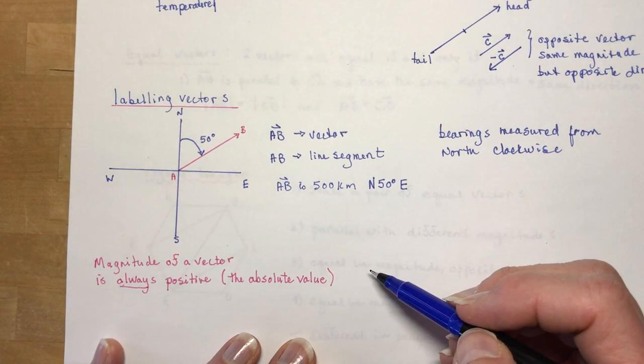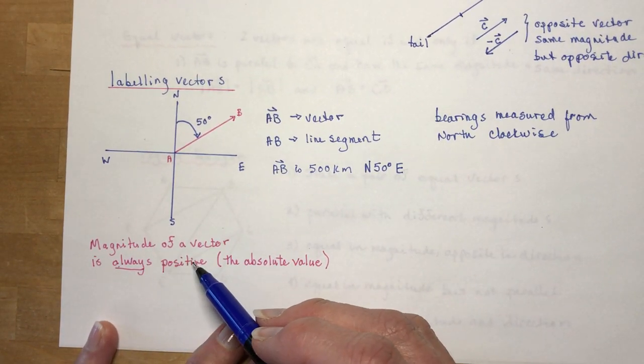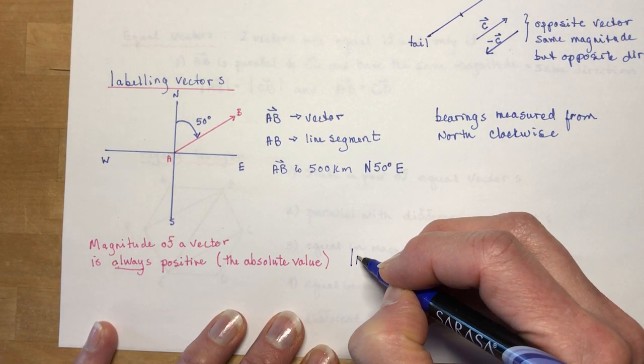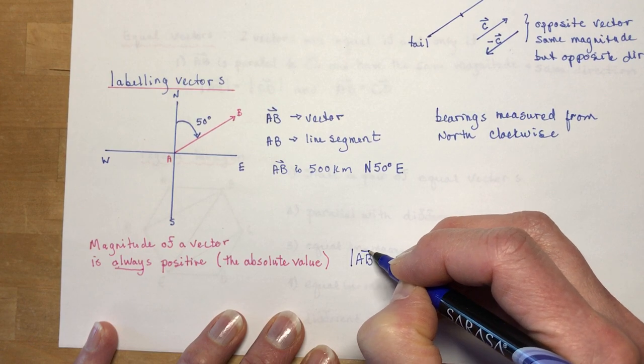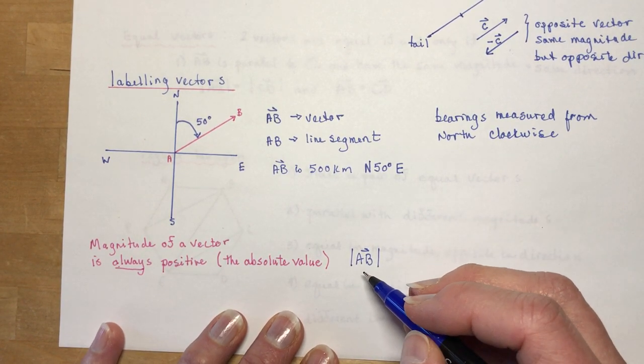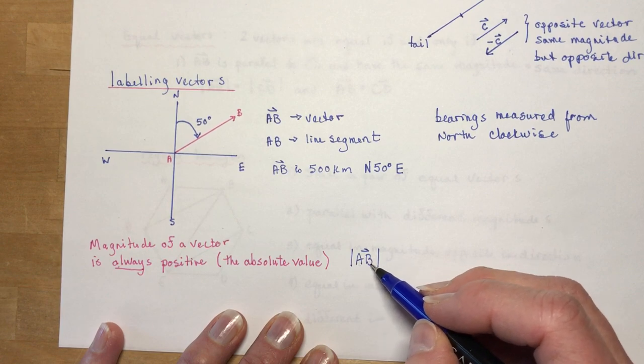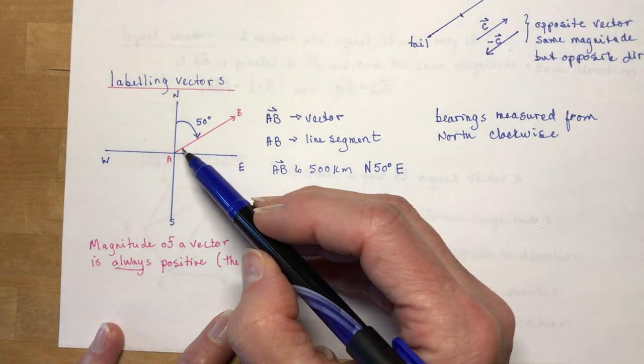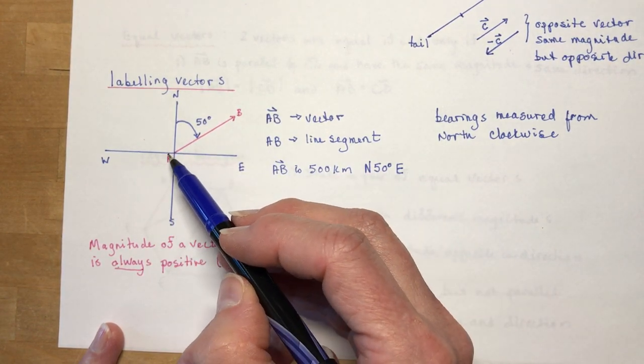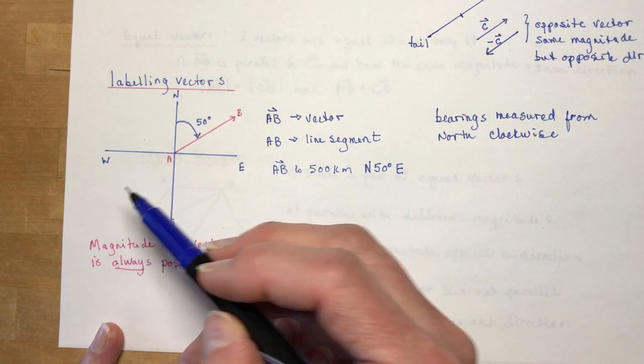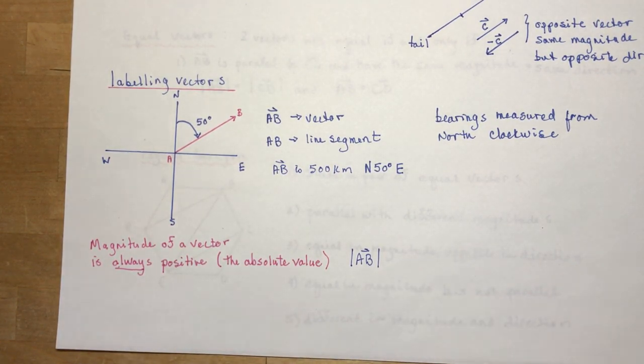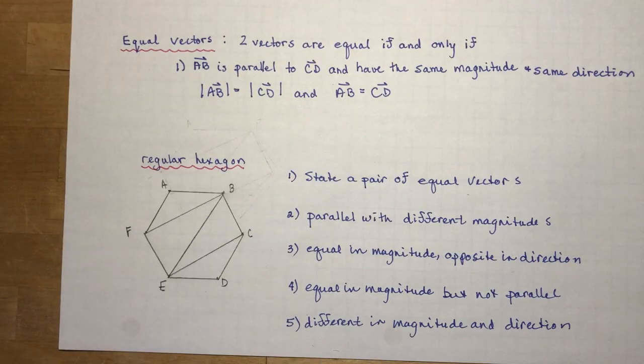Now the other thing you should note is that the magnitude of a vector is always positive. So magnitude, I would write it like this, magnitude AB, in other words I'm taking the absolute value of the length of the vector. So if it was going in an opposite direction, say this had a length of 5 and this one had a length, it was going in this direction, it was negative 5, so its magnitude would also be 5. So we never have any negative magnitudes.